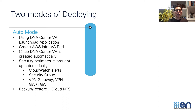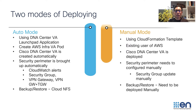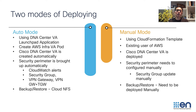To learn more about using the Auto Mode, please see the link at the end of this video. The second mode is the Manual Mode, where we will provide you with a CloudFormation template which will bring up your DNA Center VA. In this mode, you will need to update your existing security group with the right ports for your DNA Center to talk back to your enterprise network. In case you need a backup and restore server for your DNA Center VA, you will need to create a backup and restore server in the cloud or on your enterprise network.